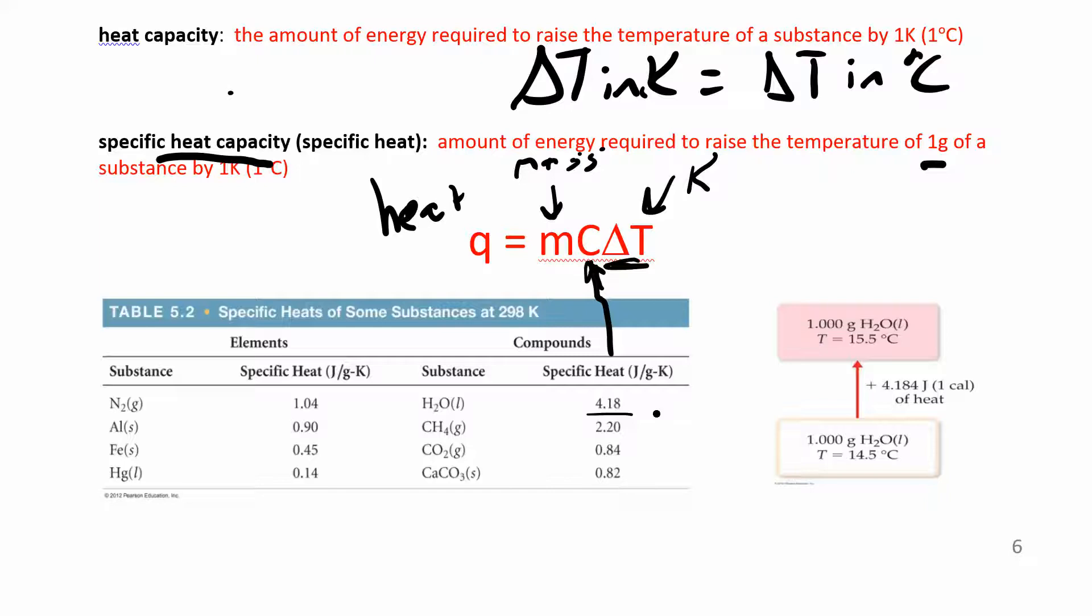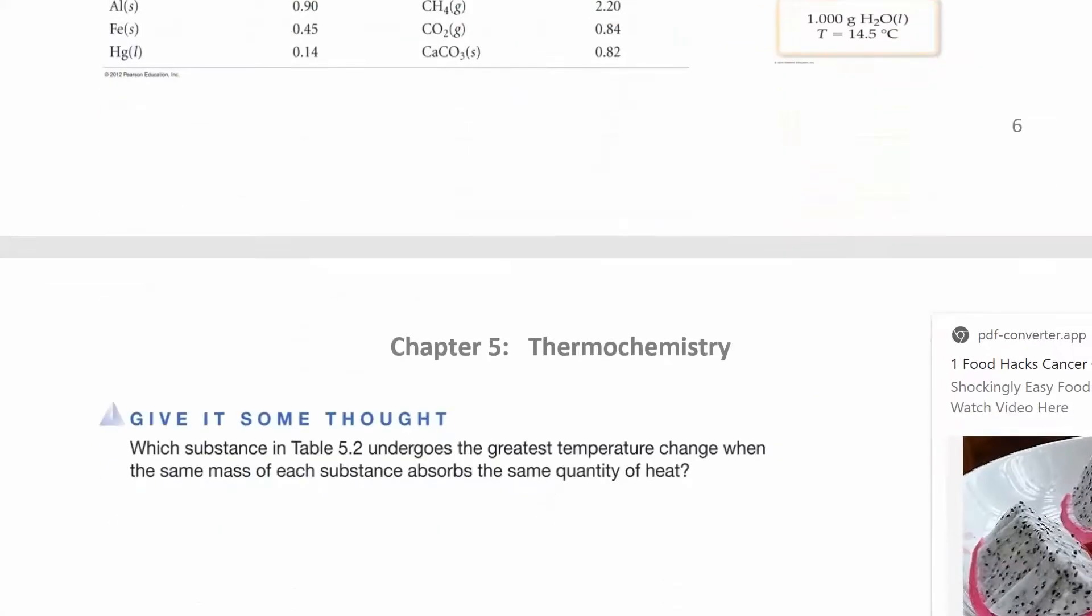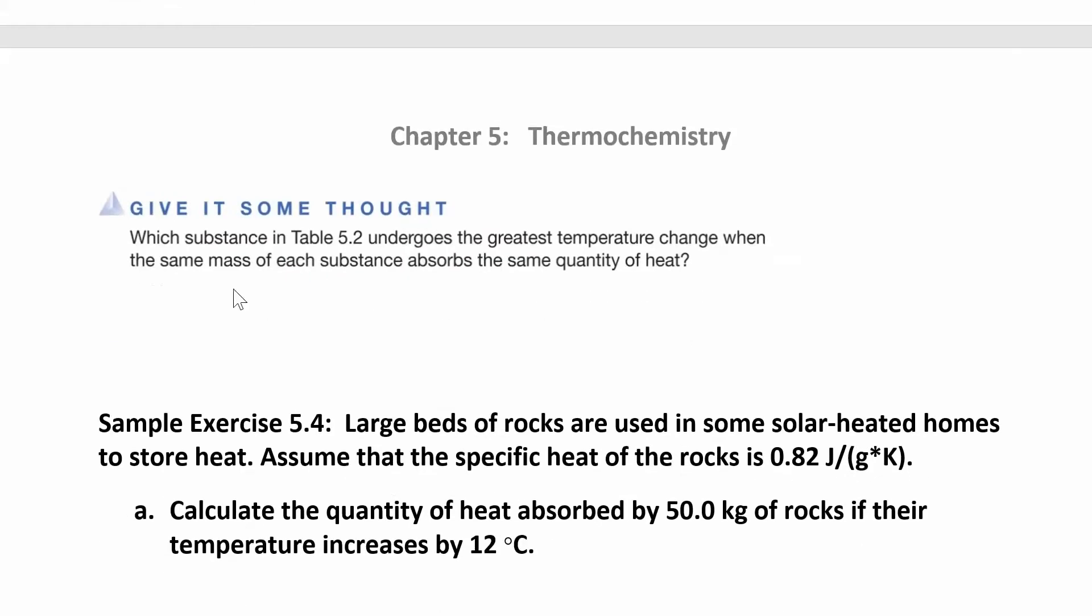That's good for us because if every time it got a little bit hot outside, water would start to boil, it would evaporate. We wouldn't have an ocean, which would kind of suck for the fish. We're kind of happy that water has a high heat capacity. It allows us to live on earth. So the next question here is a thought process. Which substance in that table undergoes the greatest temperature change when the same mass of each substance absorbs the same quantity of heat?